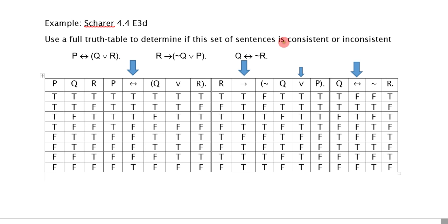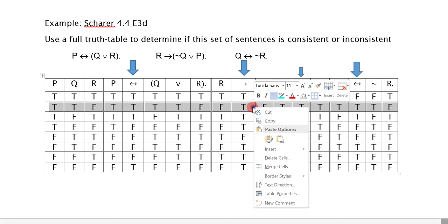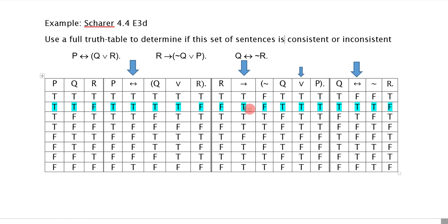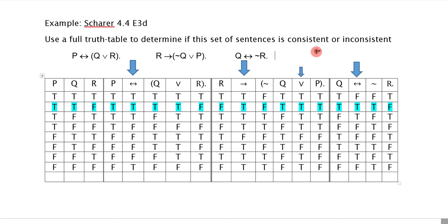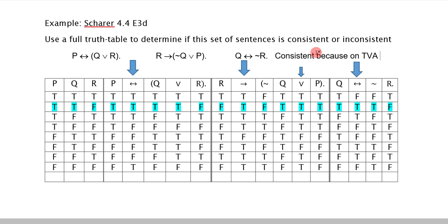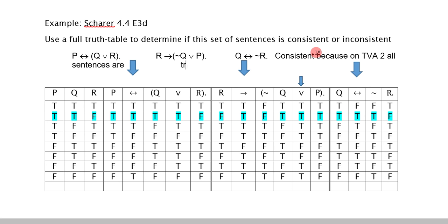Consistency is a pretty easy one to check. A set of sentences is consistent if it's possible for all the sentences to be true. So I'm just looking for a single TVA where all the sentences are true. In row one, the first sentence is true, the second is true, but the third is false — no good. True, true, true — there it is. Here's a TVA where the first sentence is true, the second is true, and the third is true. I don't even need to look at the rest because all I need for consistency is a single TVA. Consistent because on TVA 2, all sentences are true.